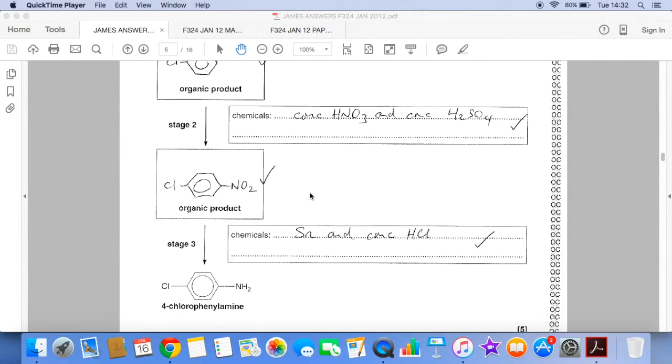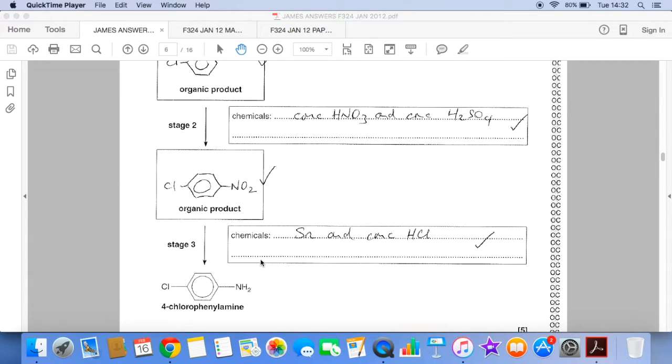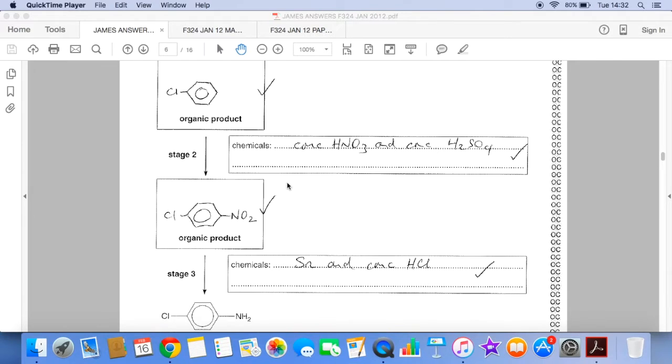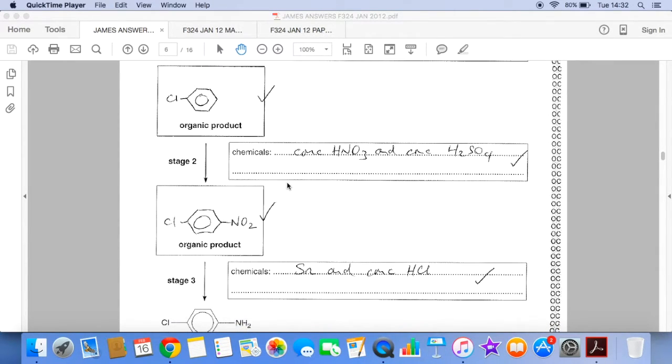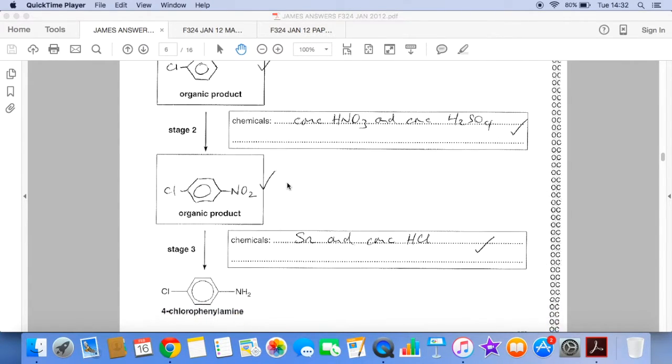I've then got to turn the nitro group into the amino group. So I would reduce it by using tin and concentrated HCl. But like I say, you could do the NO2 convert to NH2 first and then put the chlorine on if you wanted to.